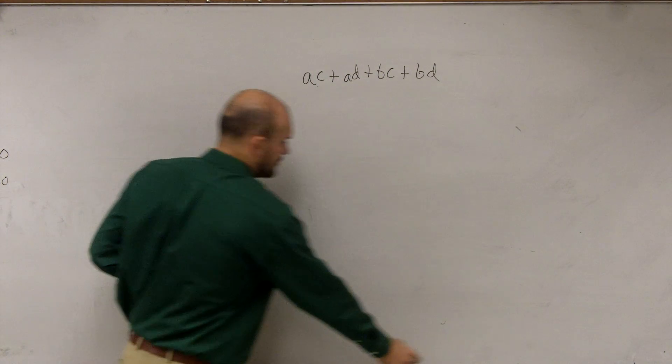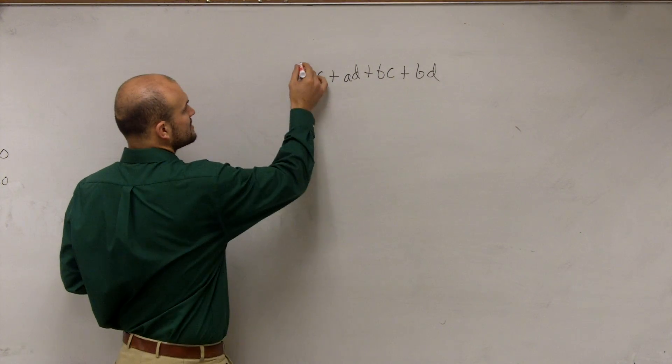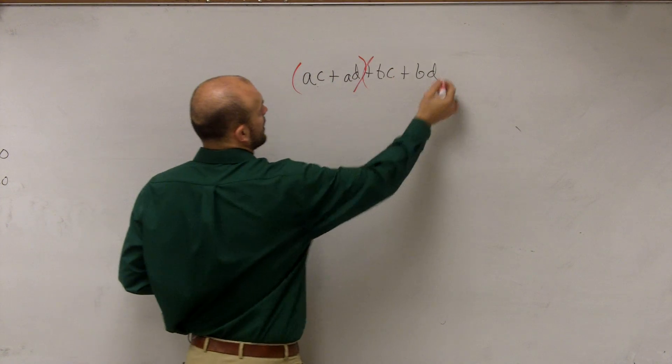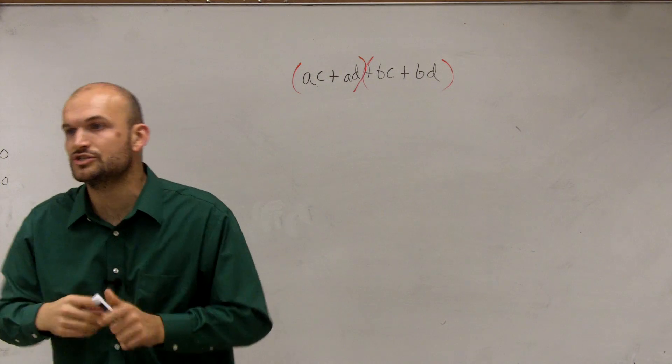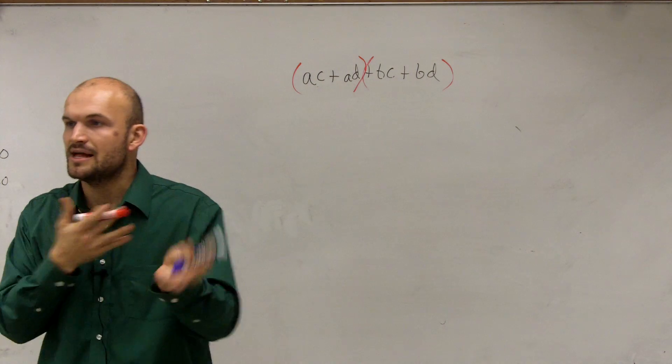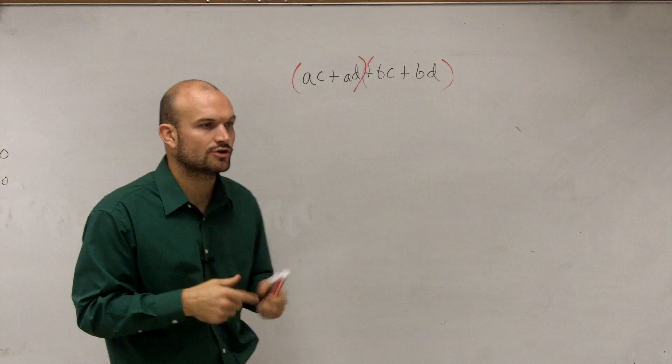But usually, just to start off, what we do is we just group the first two terms and then group the last two terms. And if we can't find anything in the GCF between those two terms, then we can rearrange the terms and group them.